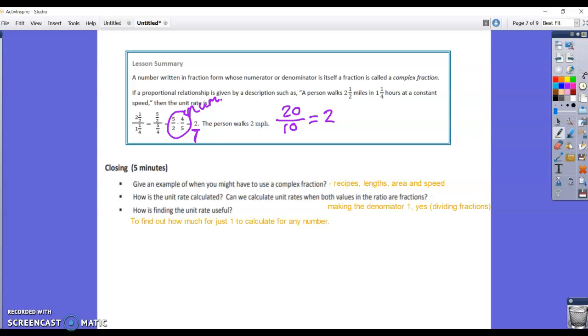How is the unit rate calculated? By making the denominator one. So in other words, you're just dividing your fractions. Can we calculate unit rates when both values in the ratio are fractions? And that is yes, by dividing your fractions. How is the unit rate useful?